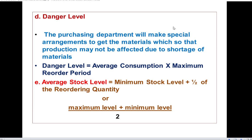Average stock level is the stock level that lies between the maximum level and the minimum level. The formula is: Average Stock Level = (Maximum Level + Minimum Level) ÷ 2, or alternatively, Minimum Stock Level + half of the reorder quantity. Thank you.